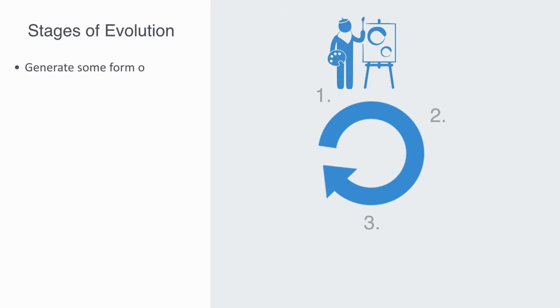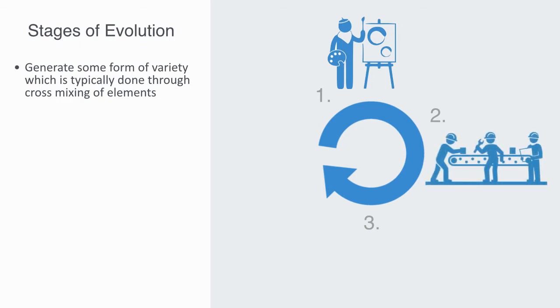There are a number of key elements that are required to be present before the process of evolution can act on a system. Firstly, the system must be able to generate some form of variety between its constituent elements, which is typically done through some form of cross mixing between elements. Secondly, components must be exposed to the operating environment and capable of acting autonomously in order to express their distinct properties or functionality.